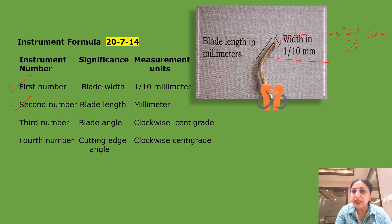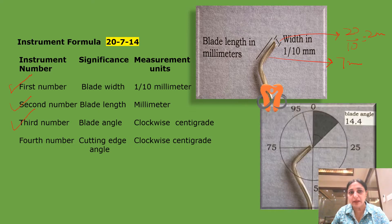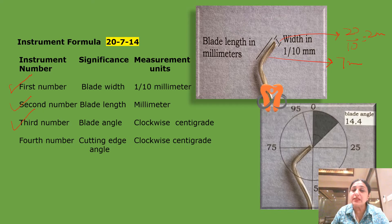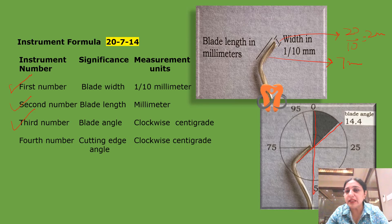So a number seven means that your length of the blade is 7 millimeters. The third number is the blade angle, and the blade angle is measured in clockwise centigrade. The blade angle is basically the angle made by the long axis of the blade with the long axis of the handle.